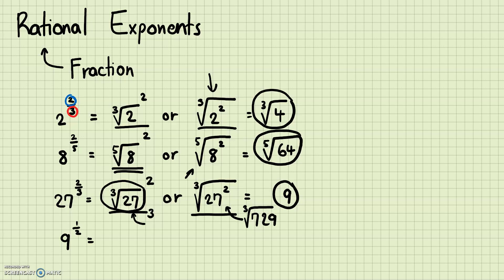Lastly, 9 to the 1/2 power — the numerator of the exponent is 1, so we just need to worry about the root. That's the square root of 9, which equals 3. I hope you became more familiar with rational exponents. Just remember: the numerator represents the exponent and the denominator represents the root. The order of doing the exponent first or root first technically doesn't matter, but depending on the situation one way is more convenient.